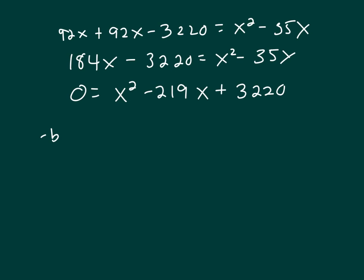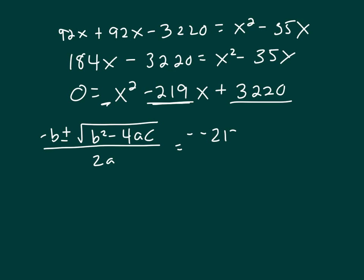So X equals negative B plus or minus B squared minus 4AC all over 2 times A. Your A is 1, your B is negative 219, and your C is 3,220. So let's plug those in there. So you've got a negative of a negative 219 plus or minus square root of B squared, which would be negative 219 squared minus 4 times 1 times C, 3,220, all over 2 times A, which is 2 times 1.